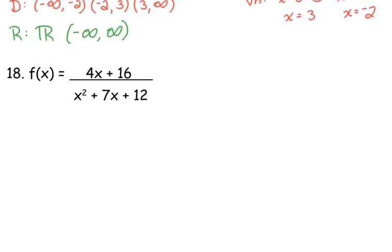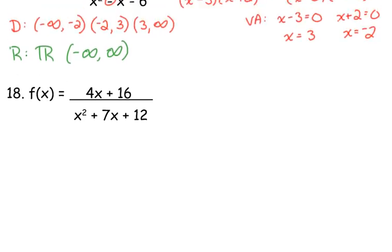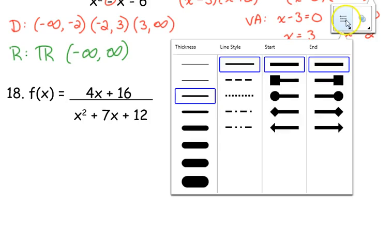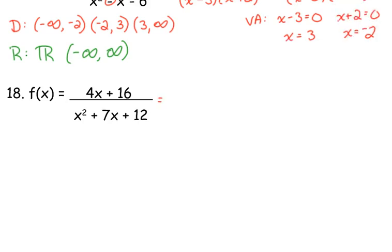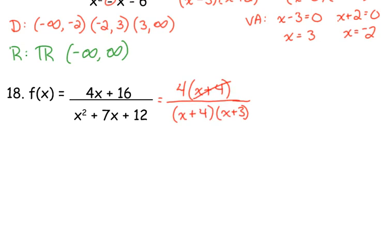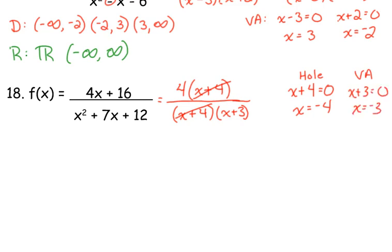Let's look at number 18. We need to start by looking for holes, and then vertical asymptotes. From the top, I would take out a GCF of 4. The bottom is x plus 4 times x plus 3. So we have a hole — where's our hole? That occurs at negative 4. We also have a vertical asymptote where the factor remaining in the denominator equals zero, so we have a vertical asymptote at negative 3.